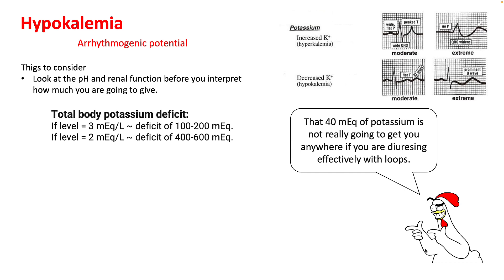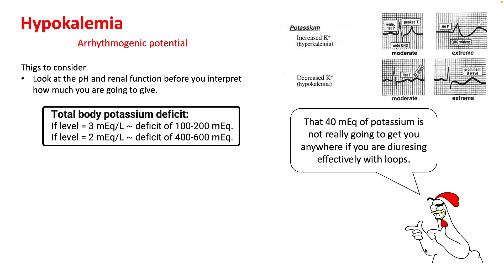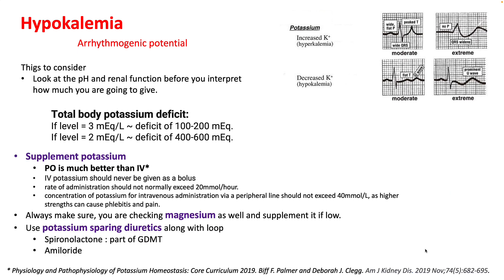Since potassium is mostly intracellular, its correction is not as straightforward as correcting a sodium deficit. Total body potassium deficit is around 100–200 mEq if your potassium is around 3, and about 400–600 mEq if your potassium is around 2. PO supplementation is much better than IV. Always keep an eye on magnesium level as well and supplement it if it is low.